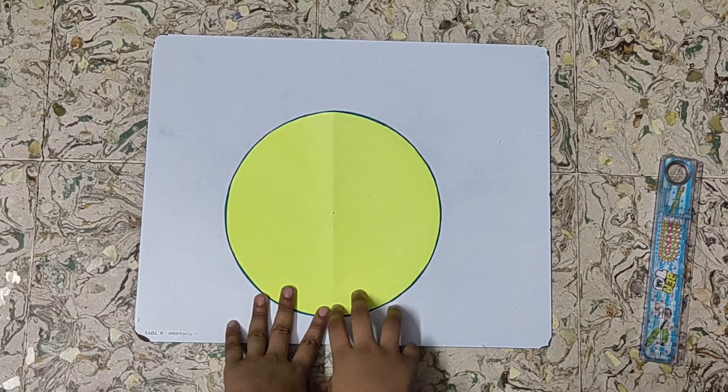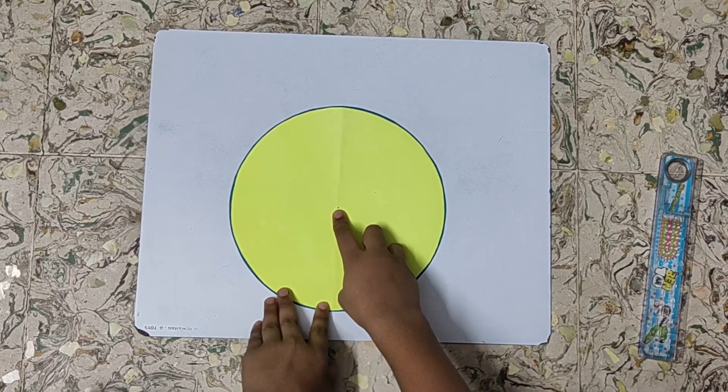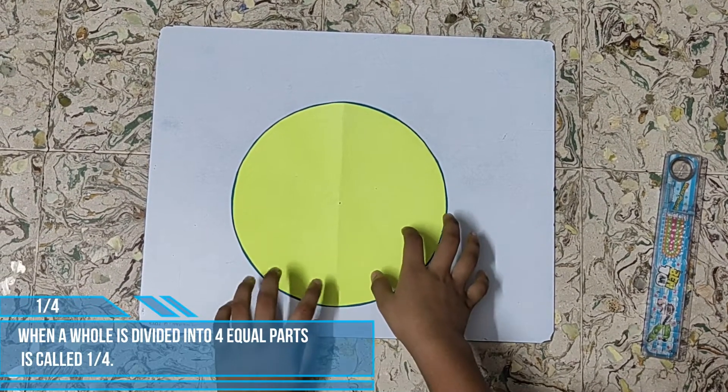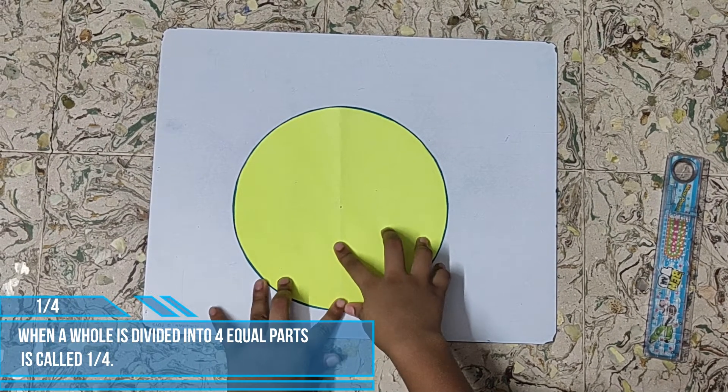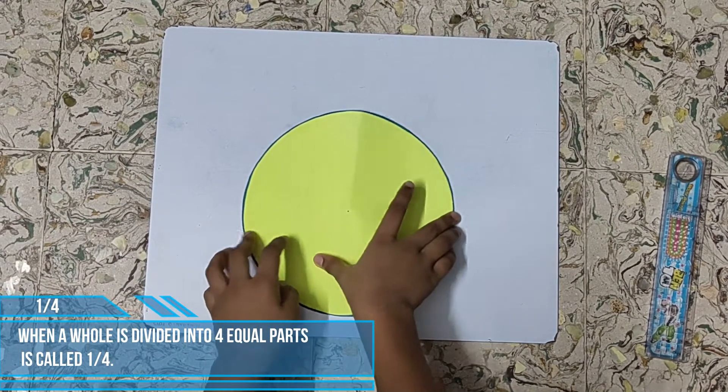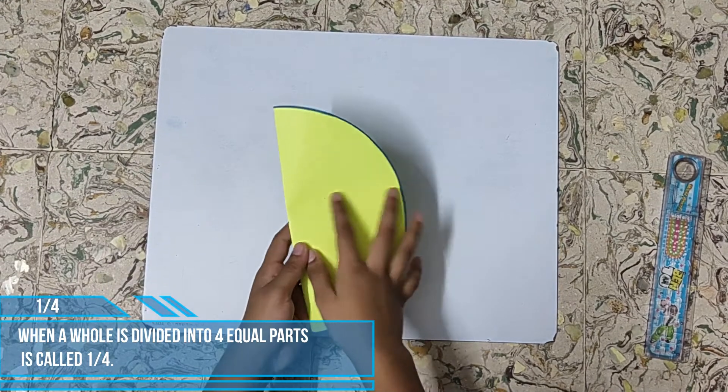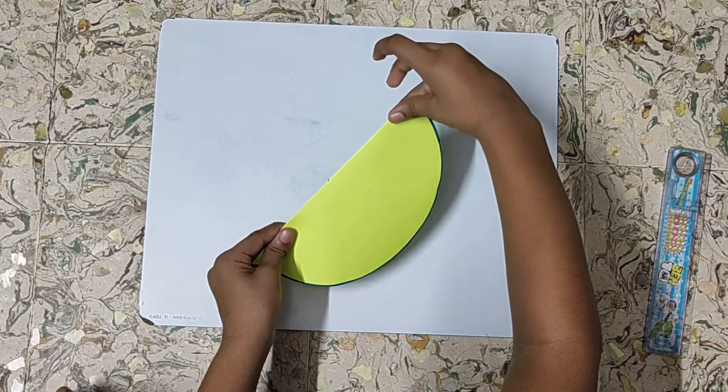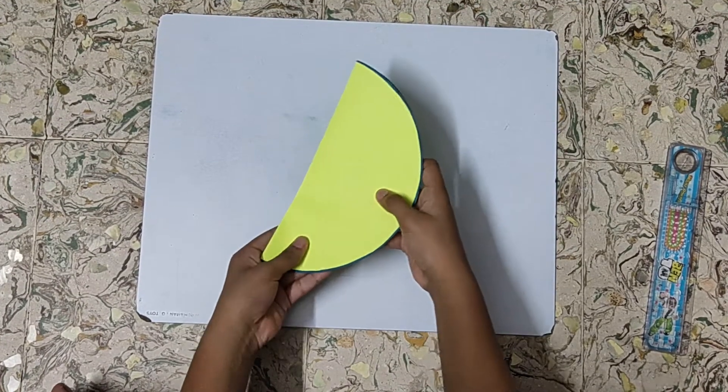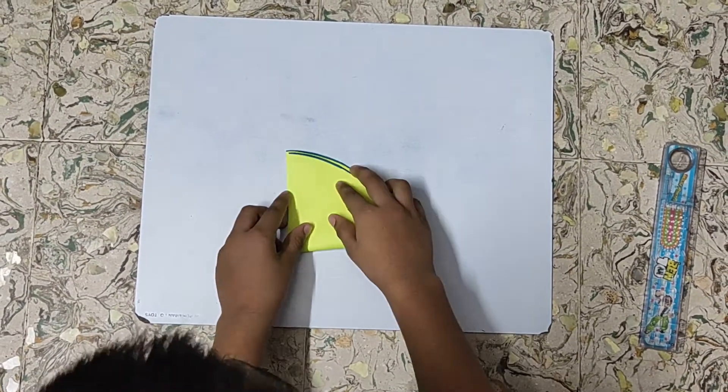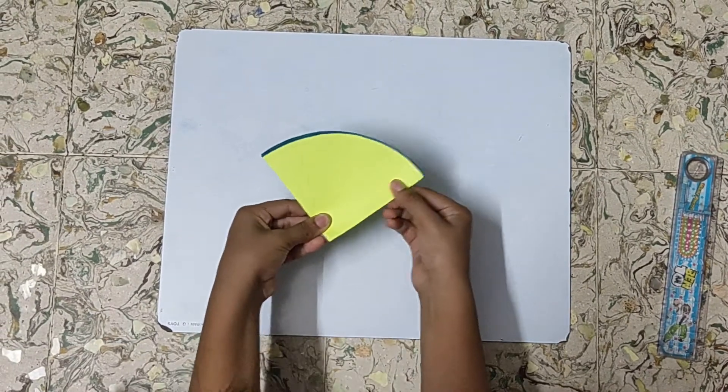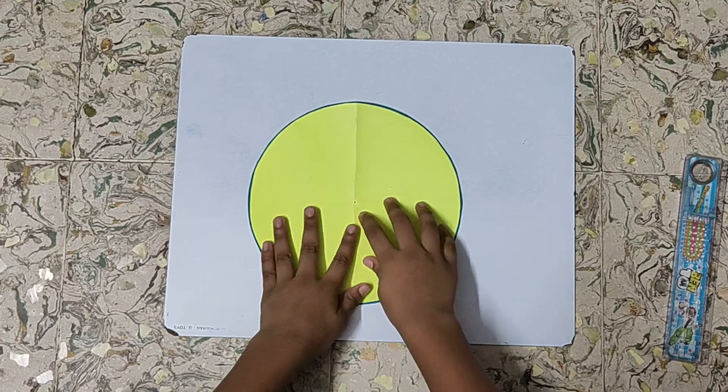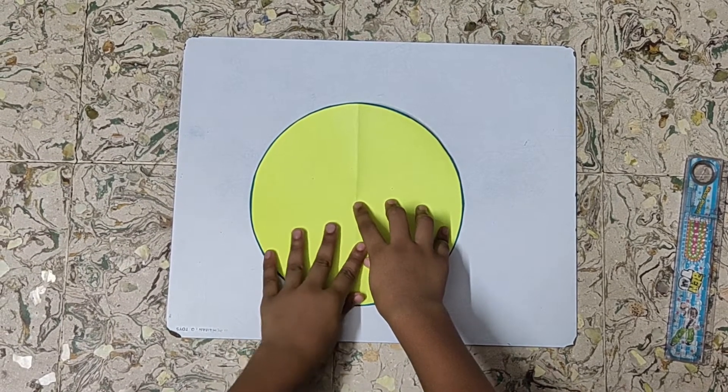I have already marked the center in the middle of the page on both sides. First, for getting 1 by 4, we will fold it like what we done in 1 by 2. Now, slowly fold it. Now, we will again fold it like this. Now, unfold it. So see, here I have made 4 equal parts.